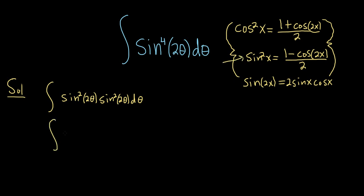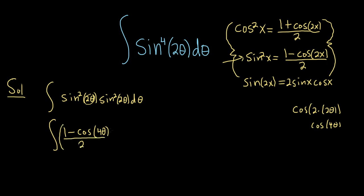This is going to be 1 minus cosine of — our x here is 2 theta, so it's cosine of 2 times 2 theta, which is cosine of 4 theta, all over 2. We're just replacing x with 2 theta everywhere: where the x appears we put 2 theta, giving 2 times 2 theta equals 4 theta.